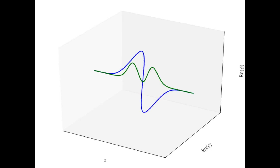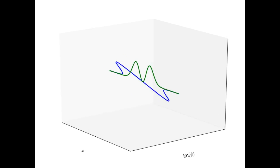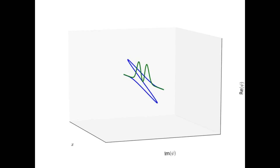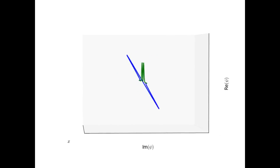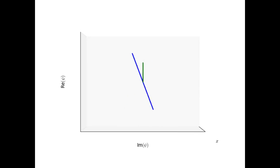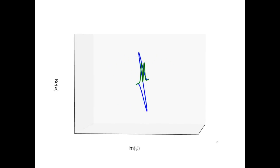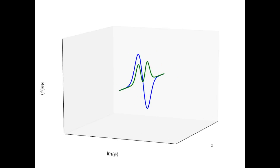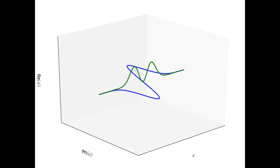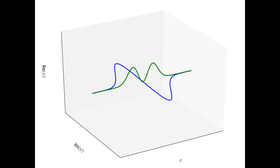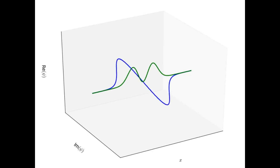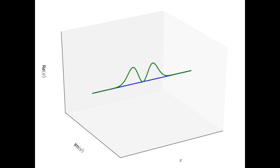Next we have the first excited state. The frequency relates to the energy of the system, which corresponds to our solution derived earlier. The higher the excited state, the greater the frequency we find in the rotation of the wave function. Note that the probability distributions of both this state and the previous one don't change in time. This is a unique property of energy eigenstates, expressed in the fact that the solution to the eigenstates can be written as stationary states multiplied by a time-dependent phase component of norm 1, which has no impact on the probability distribution defined to be the norm squared.